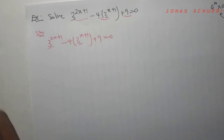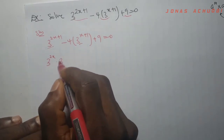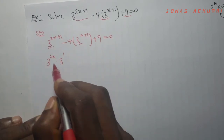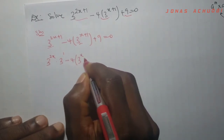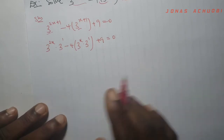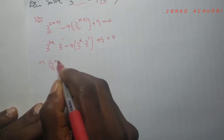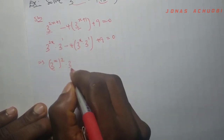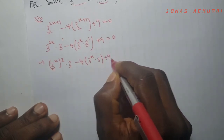So we break down 3 to the power (2x plus 1) as 3 to the power 2x times 3 to the power 1, and 3 to the power (x plus 1) as 3 to the power x times 3 to the power 1. Now 3 to the power 2x can be rewritten as (3 to the power x) squared, since x times 2 is 2x. So the equation becomes (3 to the power x) squared times 3, minus 4 times 3 to the power x times 3, plus 9 equal to 0.